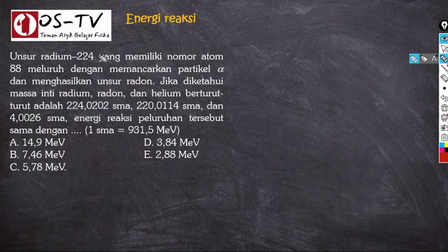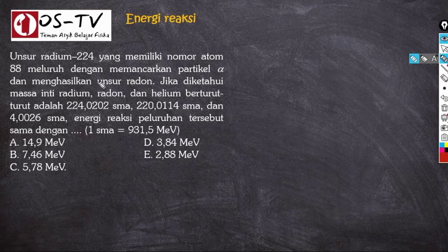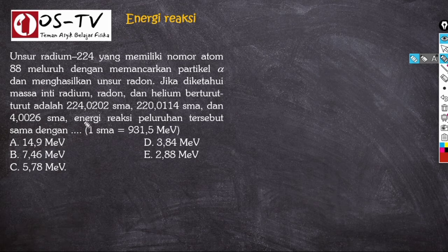Soal: unsur radium-224 dengan nomor atom 88 meluruh dengan memancarkan partikel alpha dan menghasilkan unsur radon. Diketahui massa inti radium, radon, dan helium berturut-turut adalah nilai yang diberikan, dan 1 SMA = 931,5 MeV. Maka energi reaksi peluruhan tersebut adalah berapa?